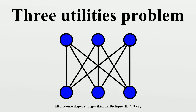Alternatively, it is possible to show that any bridgeless bipartite planar graph with V vertices and E edges satisfies E ≤ 2V - 4, by combining the Euler formula V - E + F = 2 with the observation that the number of faces is at most half the number of edges. In the utility graph, E equals 9 and 2V - 4 equals 8, violating this inequality. So the utility graph cannot be planar.